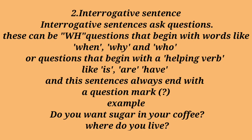The next type is the interrogative sentence. Interrogative sentences ask questions. These can be questions beginning with wh-words like when, why, who, or questions that begin with a helping verb like is, was, were. Interrogative sentences always end with a question mark. For example: 'What is your name?' 'Where do you go?' 'Where do you live?'